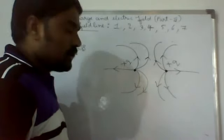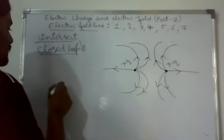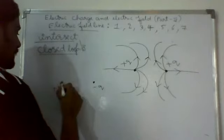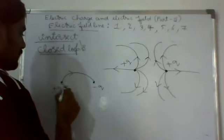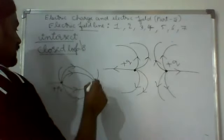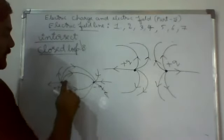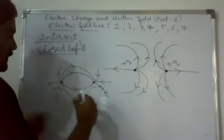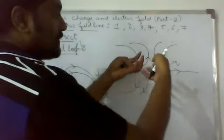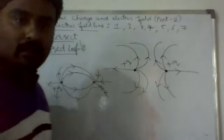For two like point charges, electric field lines exert lateral pressure on each other, which represents the electrostatic force of repulsion between two like point charges. For two equal and opposite point charges, electric field lines start from plus q and terminate on minus q, and they contract lengthwise, which represents the force of attraction between two equal and opposite point charges.